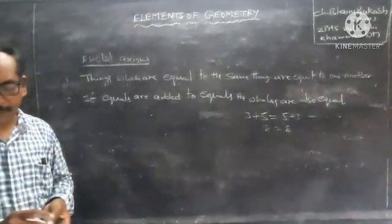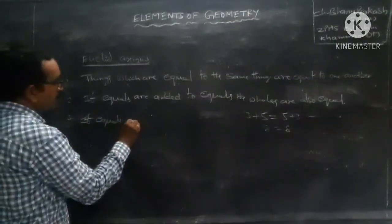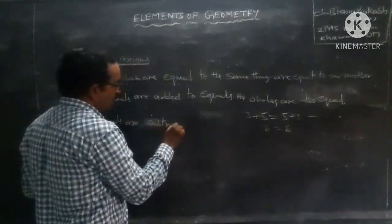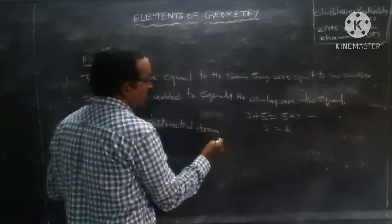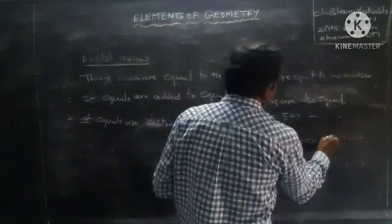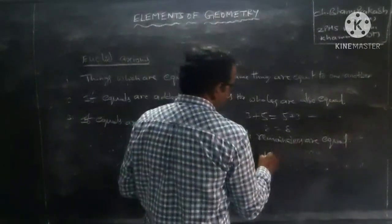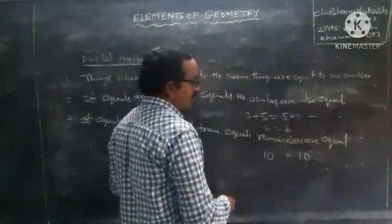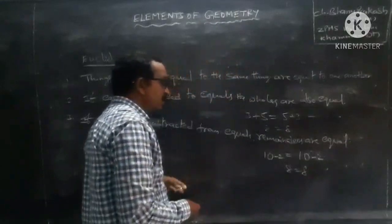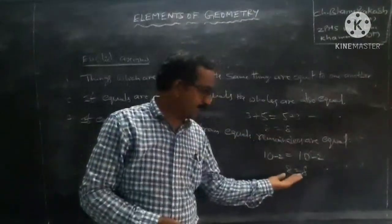Third: if equals are subtracted from equals, the remainders are also equal.